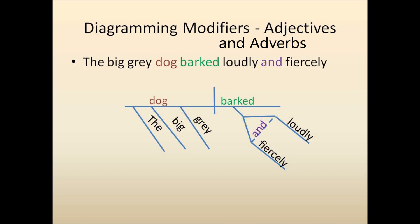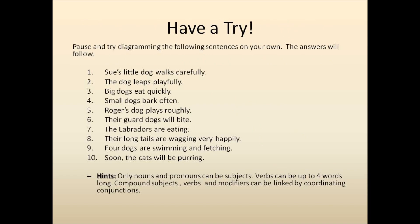So why don't you have a try? You can pause the video to try these sentences on your own. As for a hint, remember that only nouns and pronouns can be subjects. Verbs can be up to four words long. Compound subjects, verbs, and modifiers can be linked by coordinating conjunctions in the same pattern that you used for compound subjects and compound verbs. So go ahead and pause the video and then take a look at the answers.